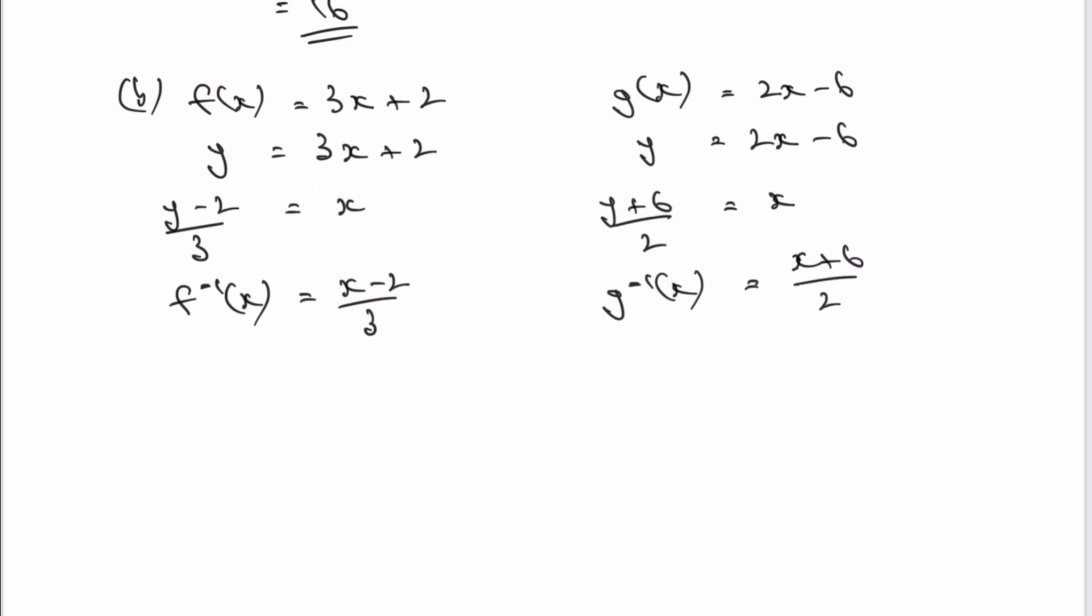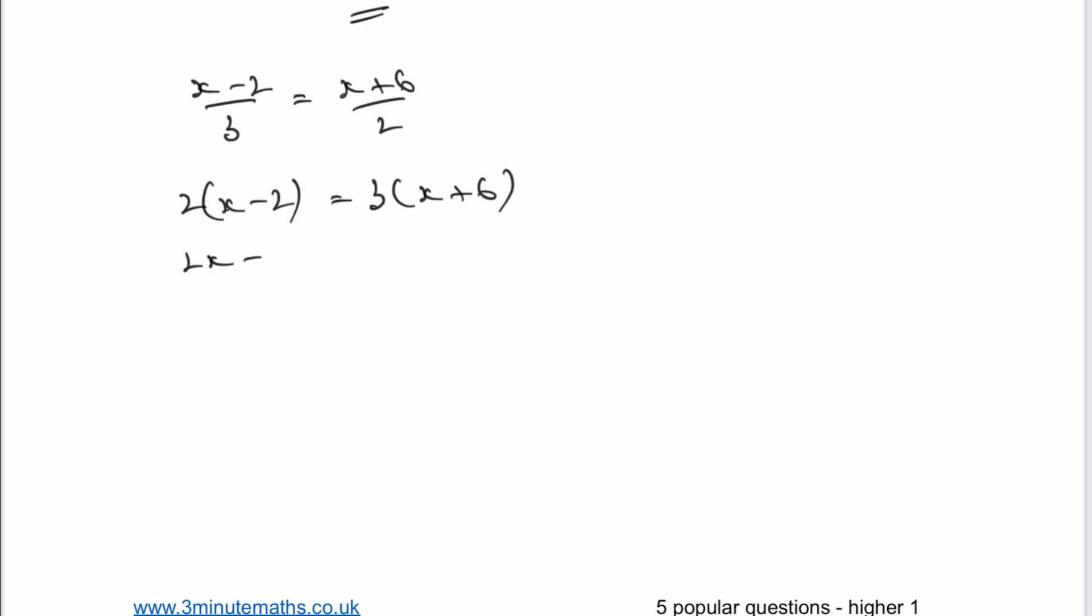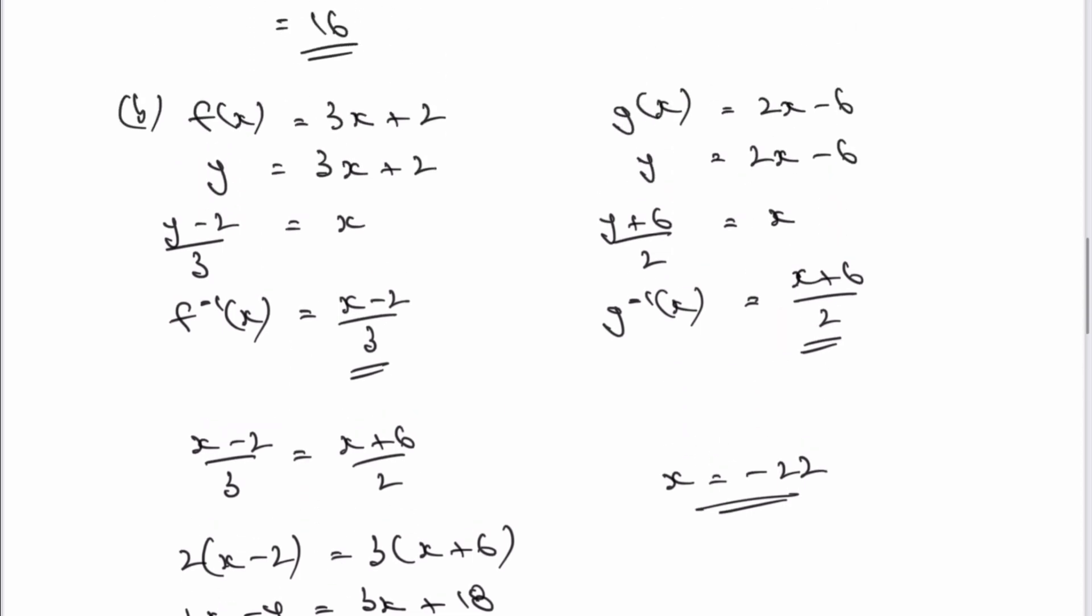And what the question is asking us to do is to make these two formulas equal to each other and then solve for X. So if we work that through, I'm going to get X minus two over three equals X plus six over two. And then really, I would just cross multiply. So if I cross multiply, I'm going to get two multiplied by X minus two equals three multiplied by X plus six. Let's expand out those brackets. I'm going to get two X minus four equals three X plus 18. If I take two X from both sides, I'm just going to get X on the right hand side. If I take 18 from both sides, I'm going to get minus 22. So therefore, X would equal minus 22 for the inverse of F and the inverse of G.